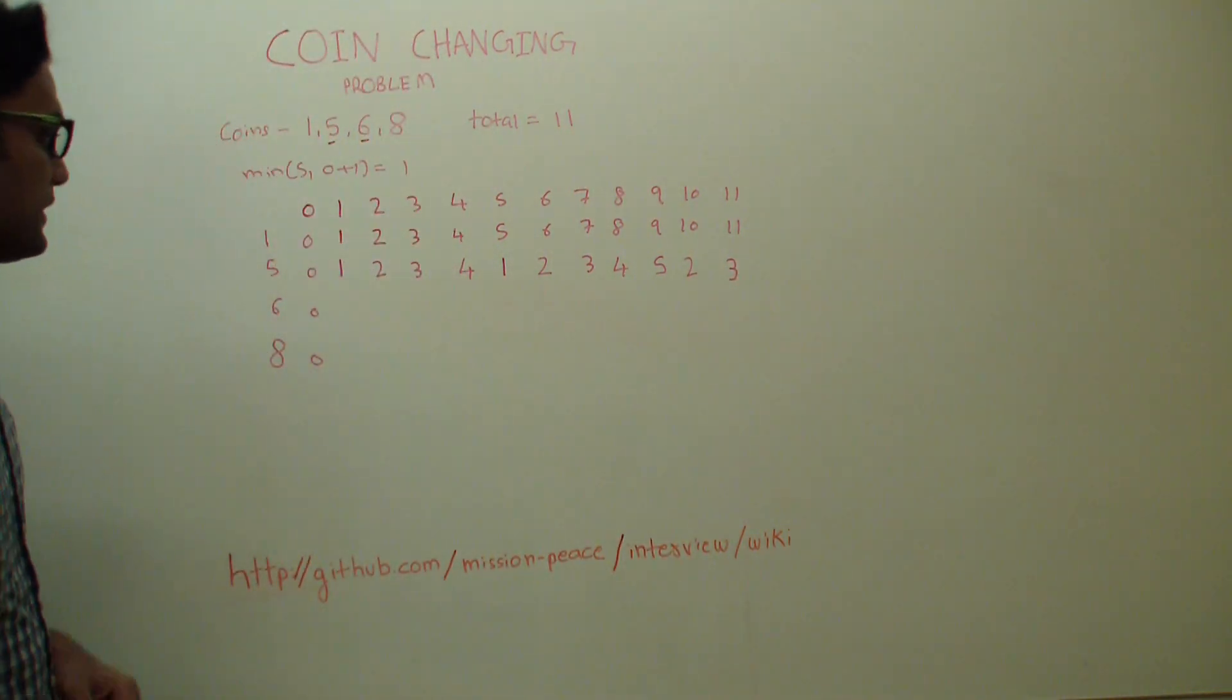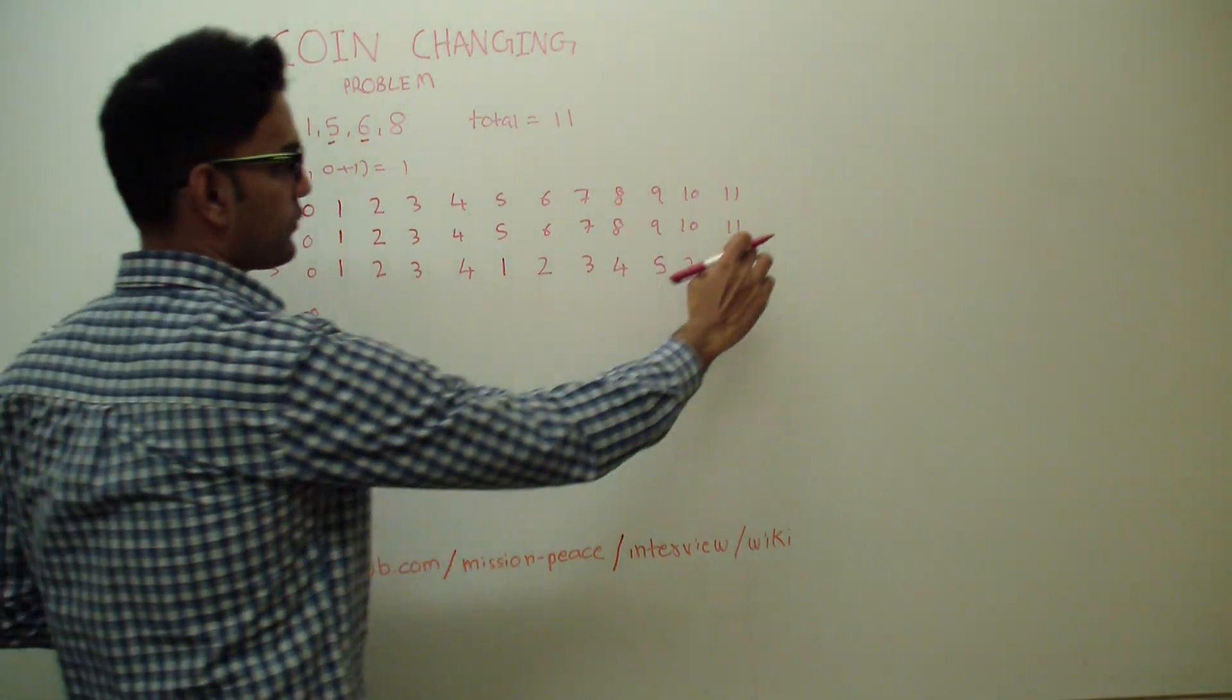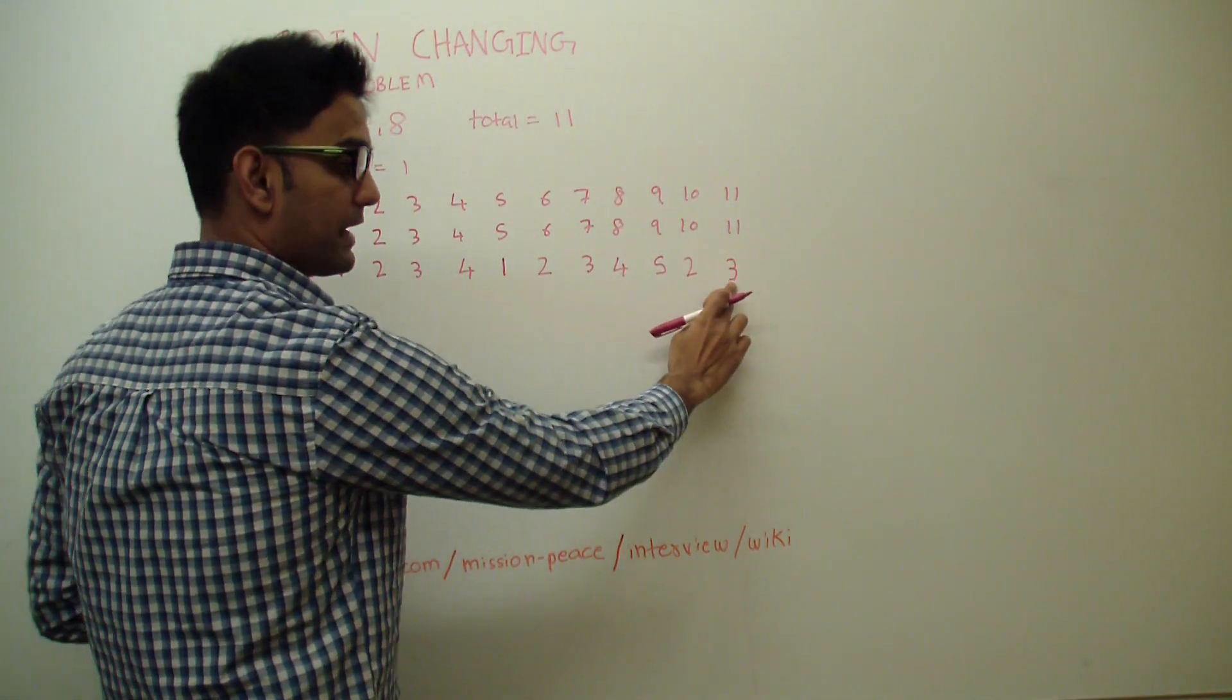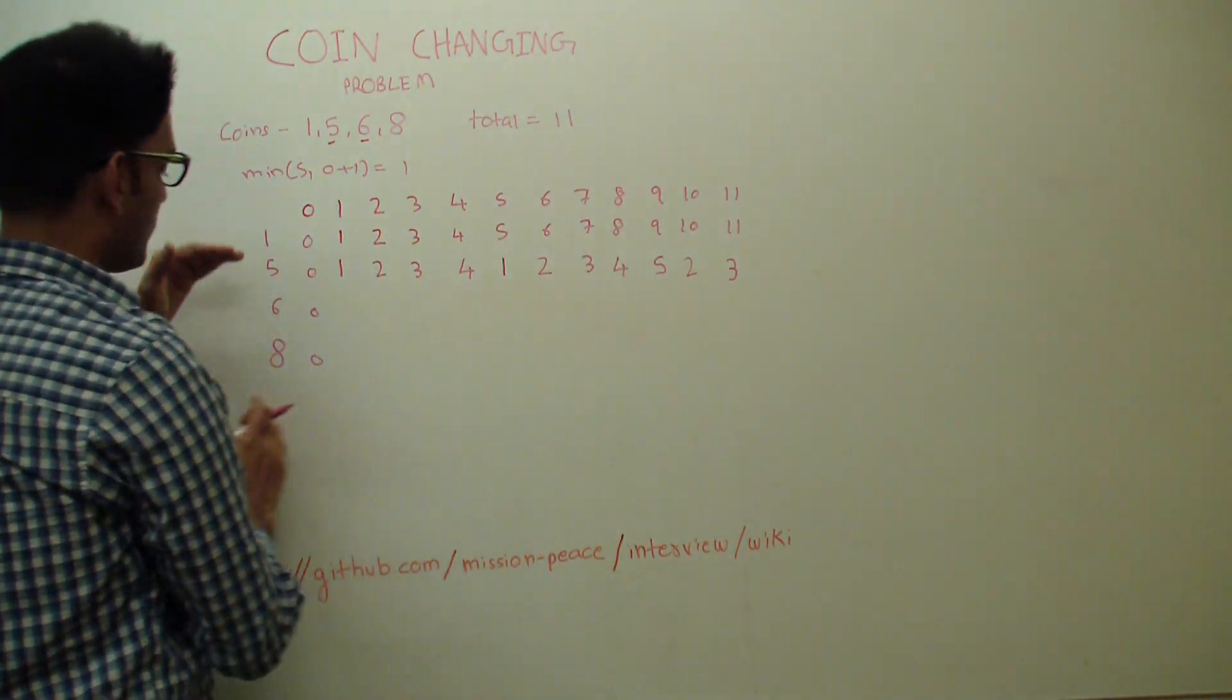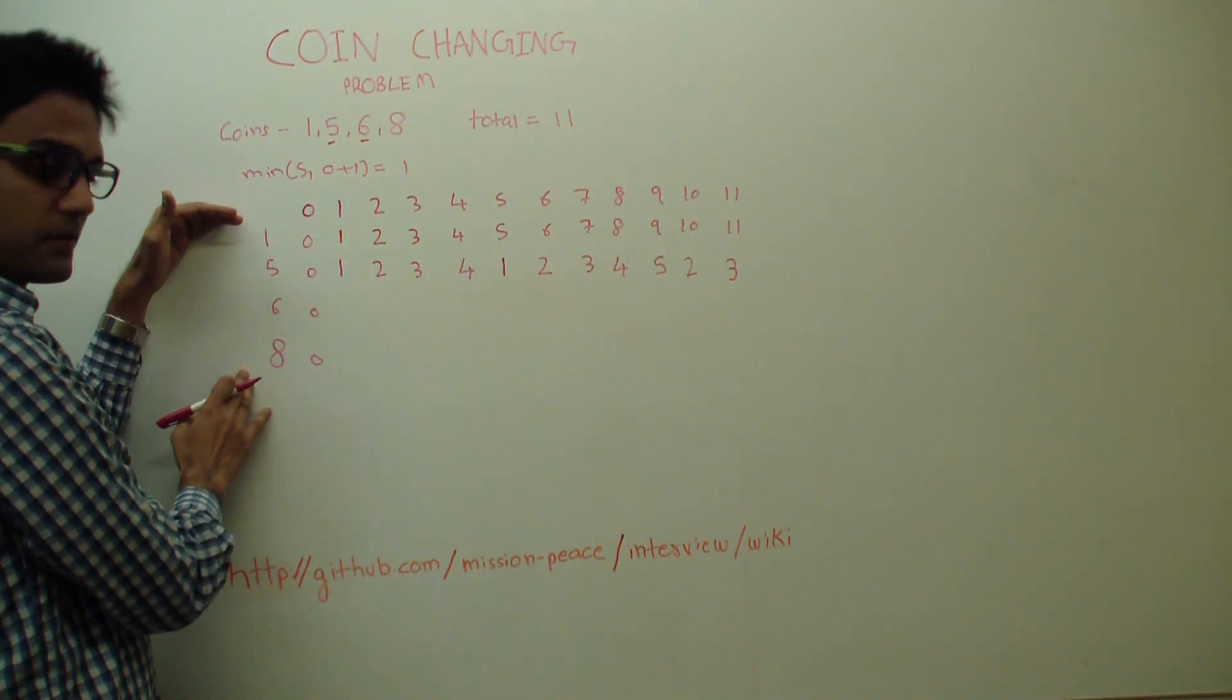So what it means is if we have coins 1 and 5 and if you have to get total 11, it'll take us at least 3 coins. So you see how we are solving the smaller problem to get the solution for the bigger problem.